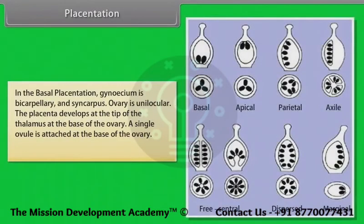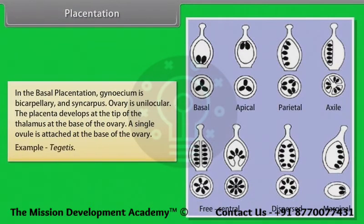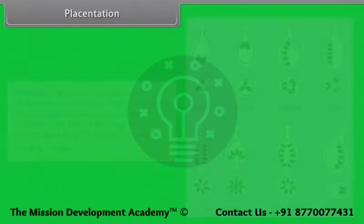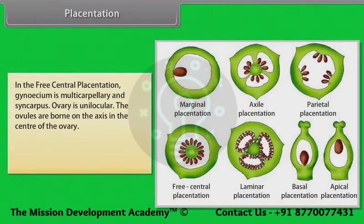In basal placentation, the gynoecium is bicarpellary and syncarpous. The ovary is unilocular. The placenta develops at the tip of the thalamus at the base of the ovary, and a single ovule is attached at the base of the ovary. Example: Tagetes.